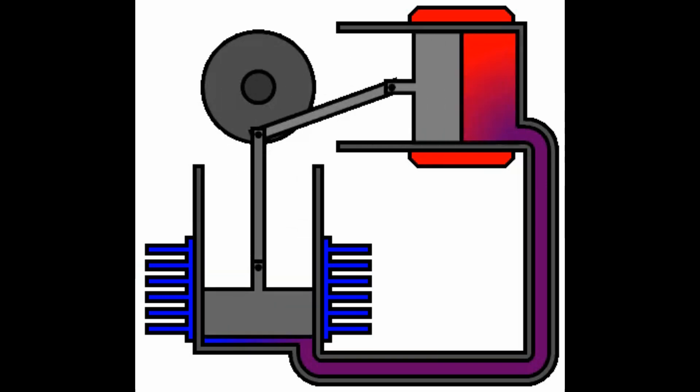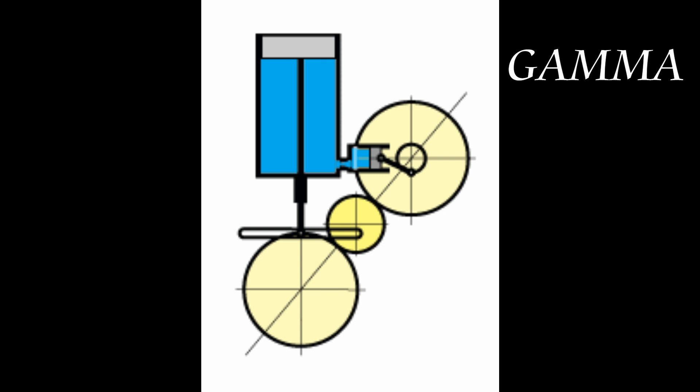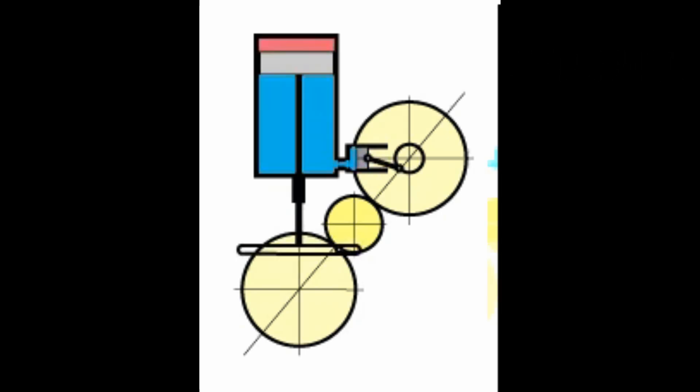The second type of engine is a gamma engine where there's a displacer cylinder with a piston inside that is not sealed to the cylinder - it's just very close tolerance. It moves the air from the hot to cold side of the engine, and then there's a smaller power piston that takes advantage of the pressure differential caused by the expansion and contraction of the working gas.